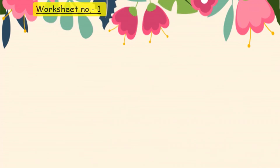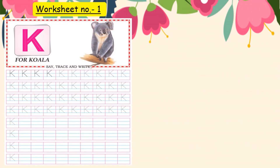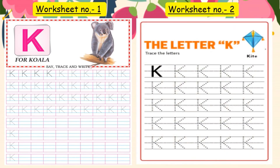Now let's see the worksheets. Worksheet number 1 — K says K, Koala. Say, trace, and write. You have to write letter K. Worksheet number 2 — K for Kite. In these two worksheets you have to do tracing and writing of letter K.